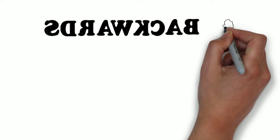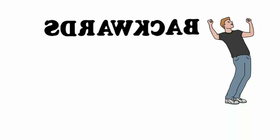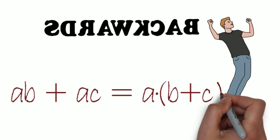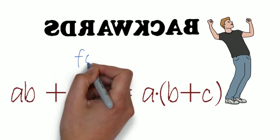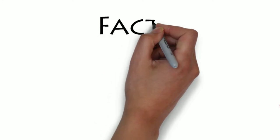We can write the distributive law backwards. By backwards, we write ab plus ac equals a times b plus c. This form is also often used for factoring expressions.